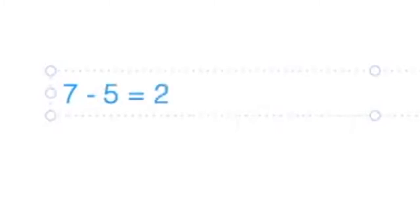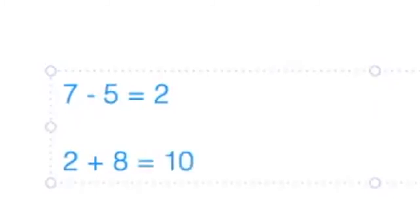So now we know that there were seven in the bowl to start, and then the boy ate five — seven minus five — and then we were left with only two in the bowl. And then we can write another equation: there were two in the bowl, and then the dad came and added eight more — two plus eight equals ten in all. At the very end of the video, there are ten apple slices in the bowl.